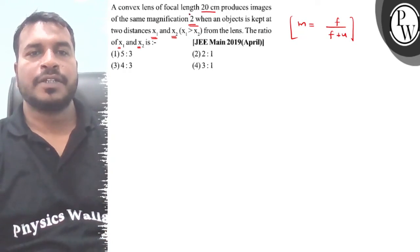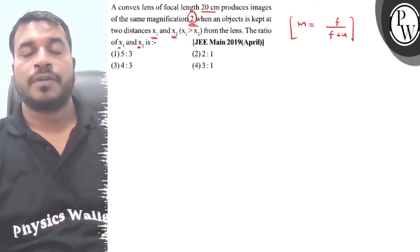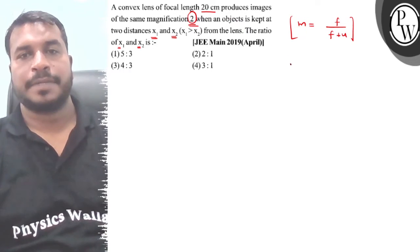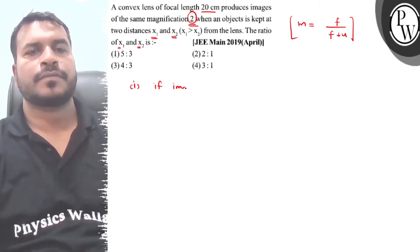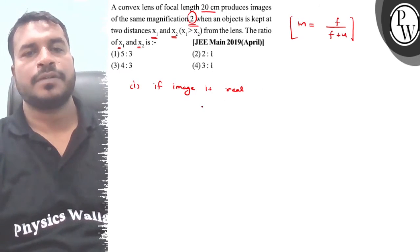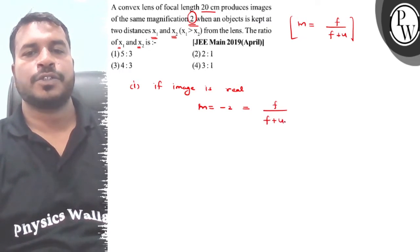So if we remember that, how much magnification is being made? So what will be real here? What will be virtual image of the concept? So if we remember in the first case, if image is real, image is real. If it is real, then what will happen in this case? We can say magnification, that is minus 2, minus 2 is equal to f upon f plus u.